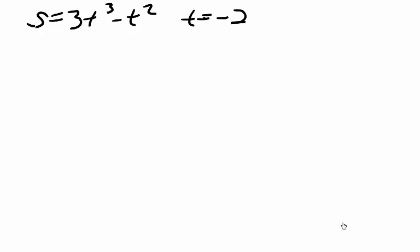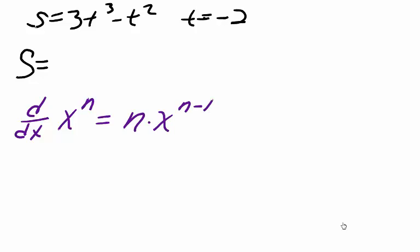Our first step is to take the derivative of our function. So s equals, and here we can apply our power rule formula which tells us that for any real number n, the derivative of some number x to the power of n is equal to n times x to the power of n minus 1. This is our power rule.